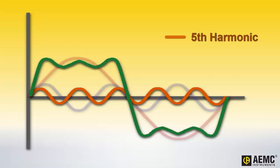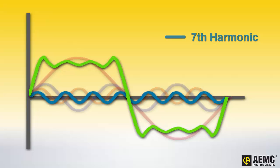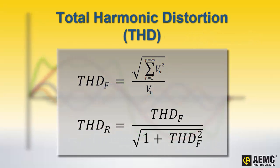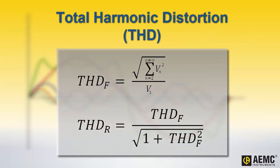Adding additional harmonics results in further distortion in the waveform. The presence of all these individual harmonics can be expressed as total harmonic distortion, or THD. The mathematical formulas for calculating THD are shown on the screen. Fortunately, modern test instruments designed for measuring harmonics can perform these calculations automatically and display the results, greatly simplifying the process of monitoring THD in a facility.